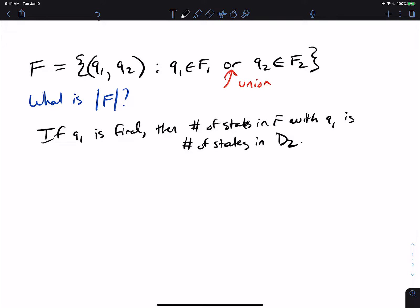Because for Q1, well, I don't care which second state is attached to the Q1 state because we've already met the condition for being a final state. So the number of states in F with Q1 in them is every single state in D2, because we just don't care which one it is.